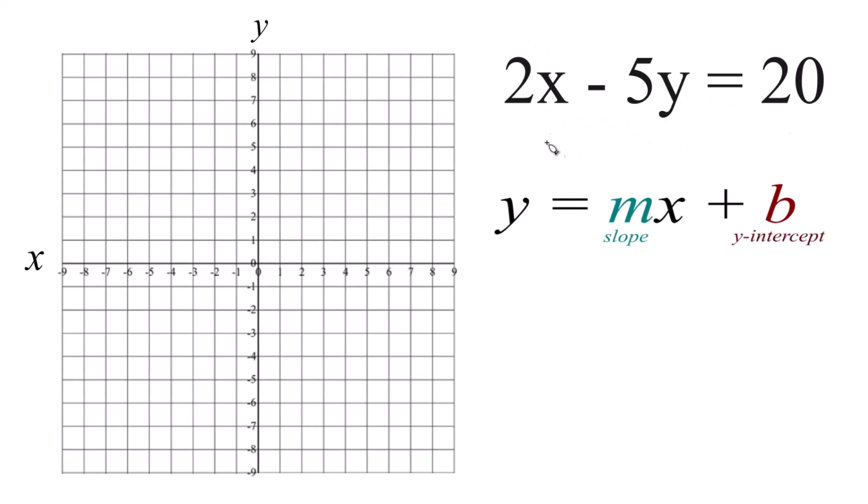In this video, we'll graph the linear equation 2x minus 5y equals 20. You could use a table of values to do this. That would work fine. Or you could use slope intercept form, and this turns out to be a little bit easier.